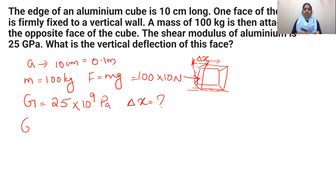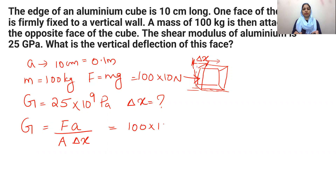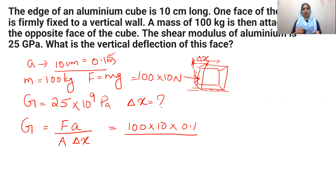We will show you the formula. Shear modulus G is equal to F multiplied by L divided by A into delta x, where A stands for the area of cross section. The cross-sectional area is square-shaped. The area of the square is side squared, which means 0.1 into 0.1.